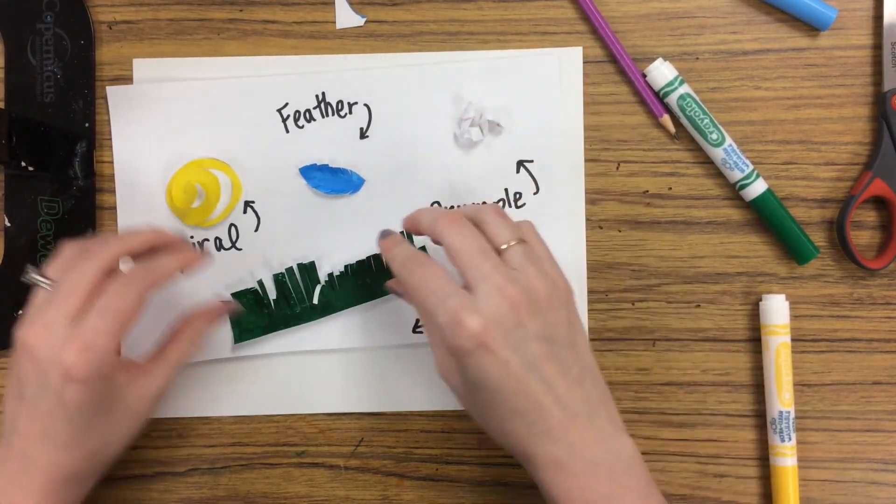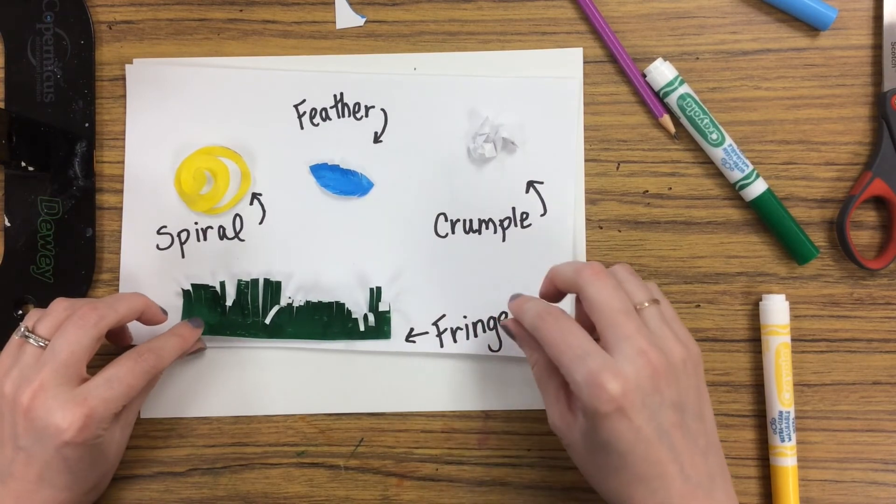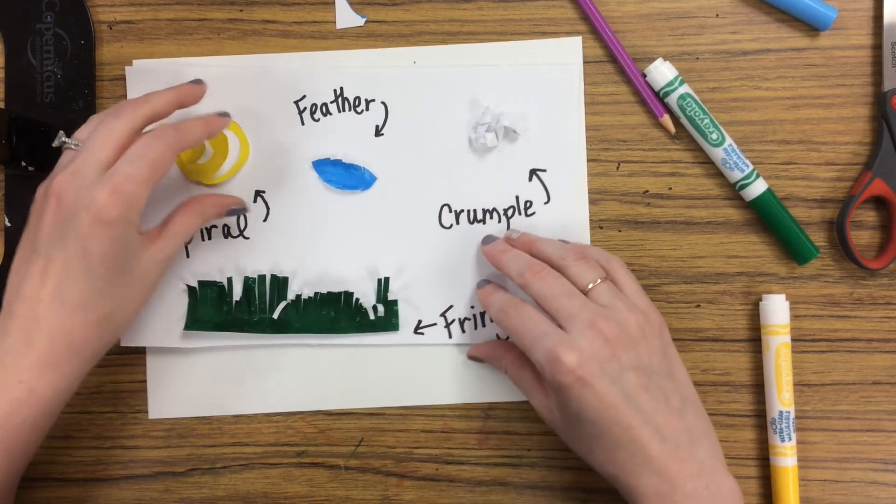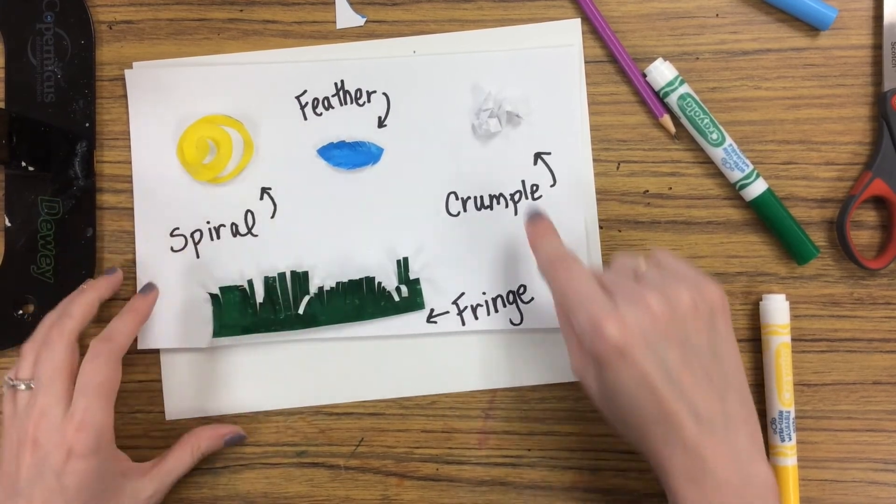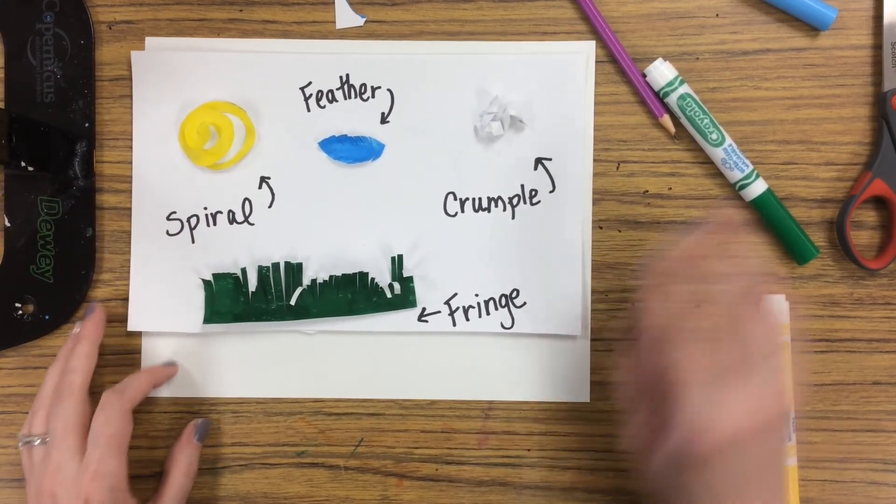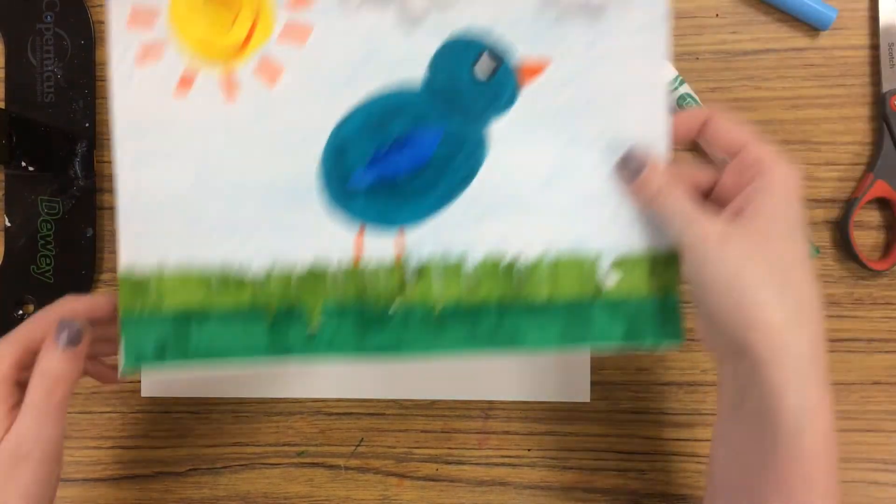So if any of these sound like they might work for your drawing this week, go ahead and try either the fringe, spiral, feather, or crumpling technique with some paper to add a little bit of texture. I can't wait to see what you come up with.